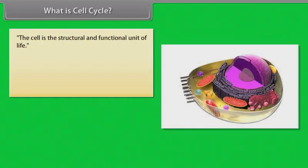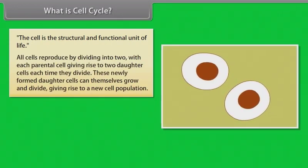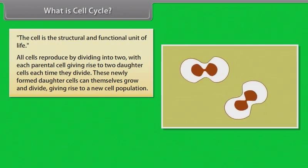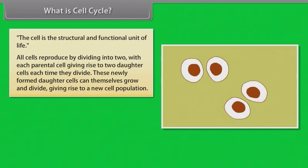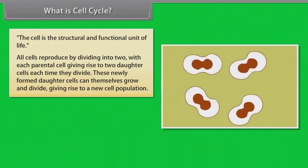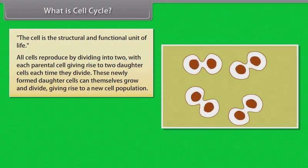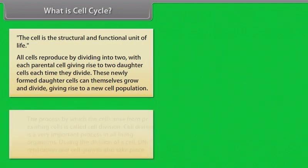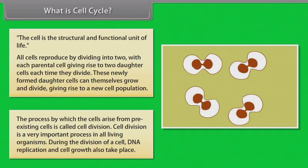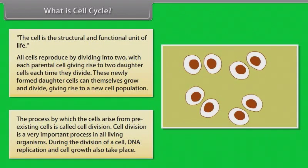The cell is the structural and functional unit of life. All cells reproduce by dividing into two, with each parental cell giving rise to two daughter cells. These newly formed daughter cells can themselves grow and divide, giving rise to a new cell population. The process by which cells arise from pre-existing cells is called cell division. It is a very important process and found in all living organisms.